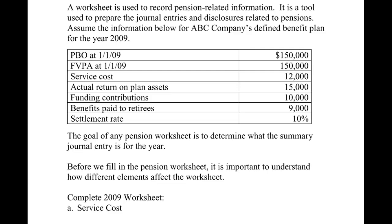Hey everyone, it's Professor Rako here. We're continuing our chapter on pensions — this is our first time introducing a pension worksheet. Our first couple of videos covered the different types of retirement plans: defined contribution and defined benefit. We then looked at accounting issues for defined benefit plans, specifically over- versus underfunded status. Now we're putting things together into a worksheet. The Kiso book uses worksheets throughout; the Spiceland book puts it at the end of the chapter. I'm a big fan of the worksheet — it makes things way easier and keeps everything nice and neat, almost like an Excel spreadsheet format.